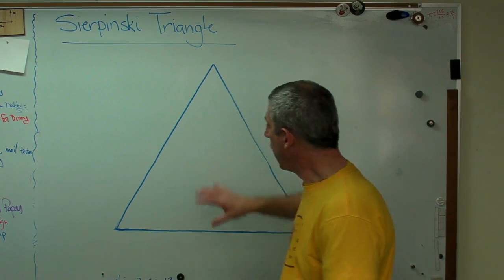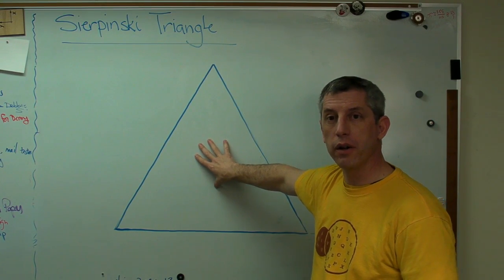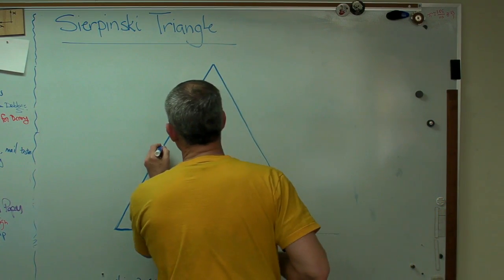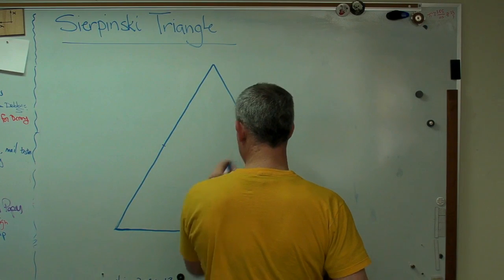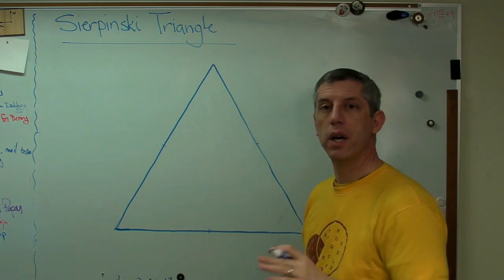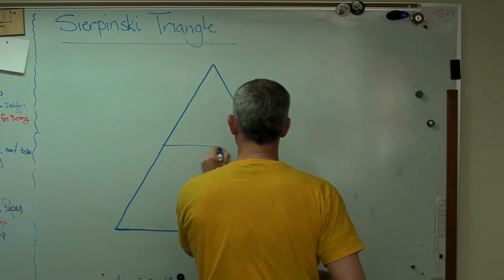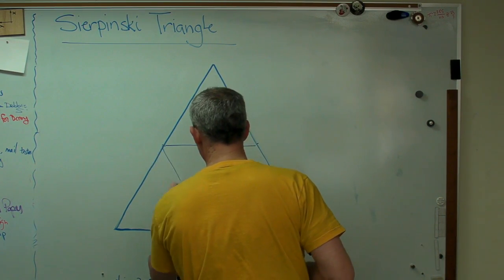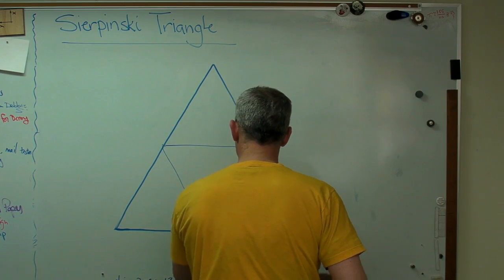So the algorithm is pretty simple. You start with an equilateral triangle, and then you find the center point on each side. I'm going to kind of eyeball this. And that looks pretty good. So I mark the center points. Now connect the center points, and you get another equilateral triangle.